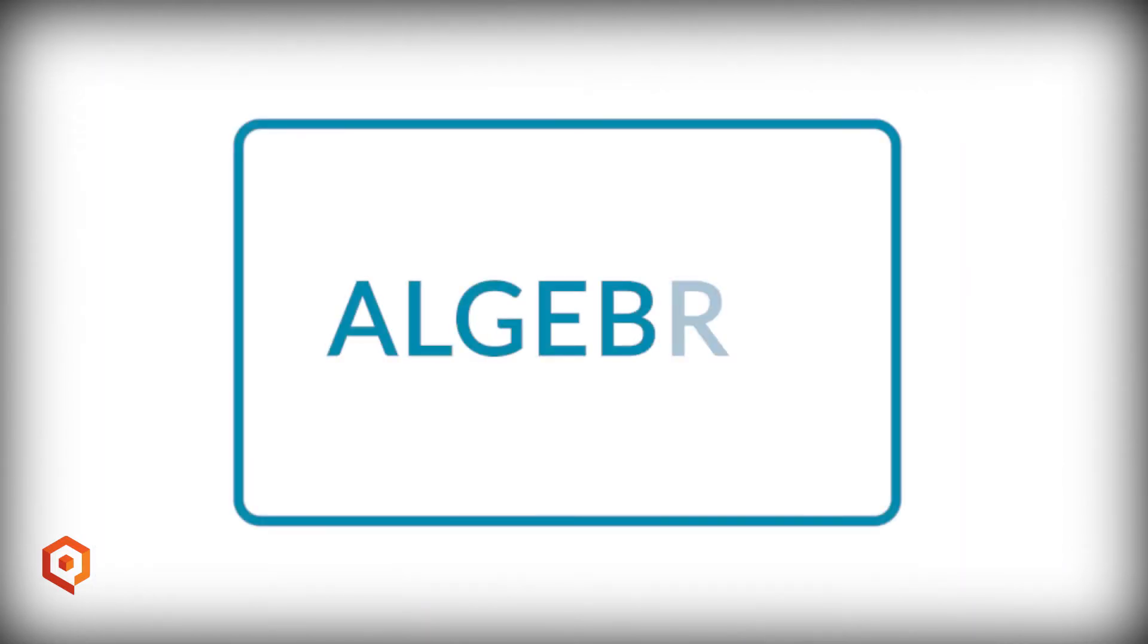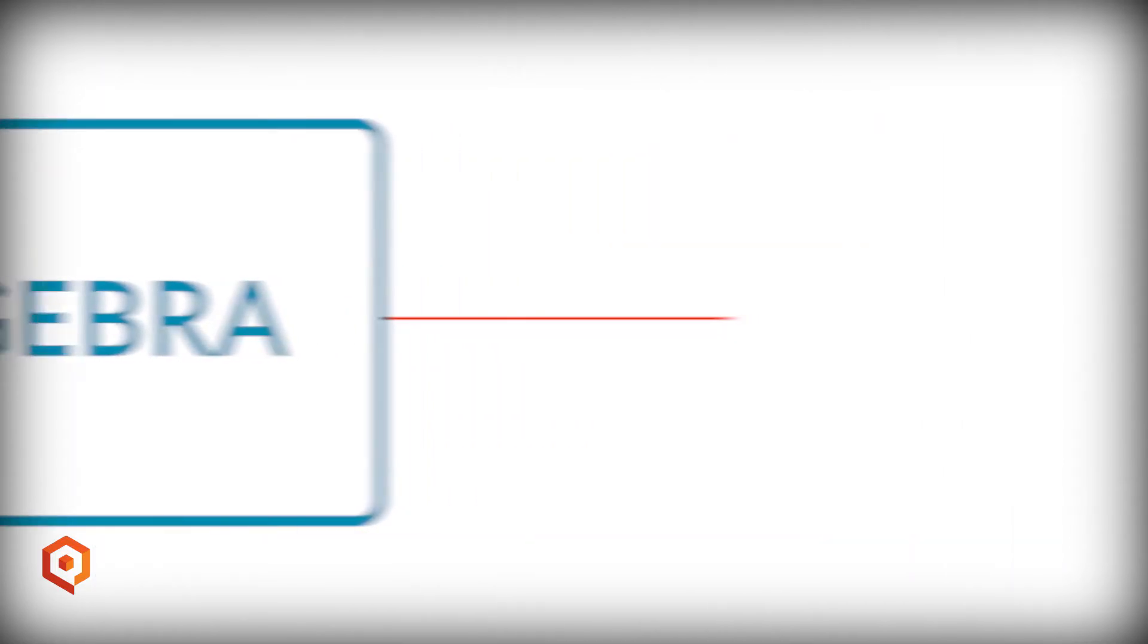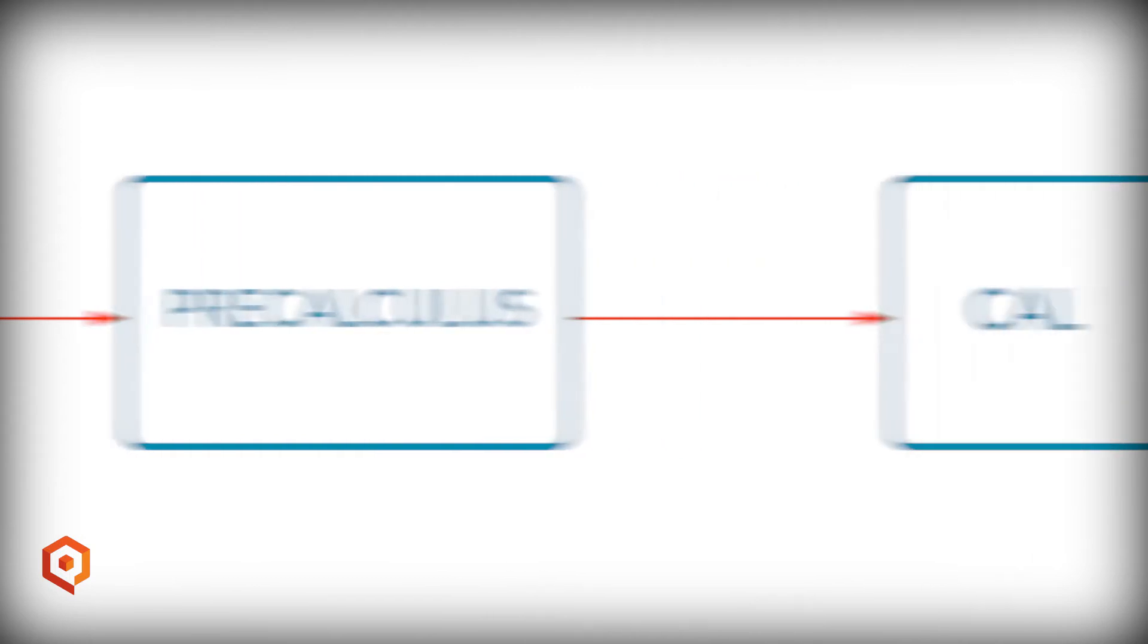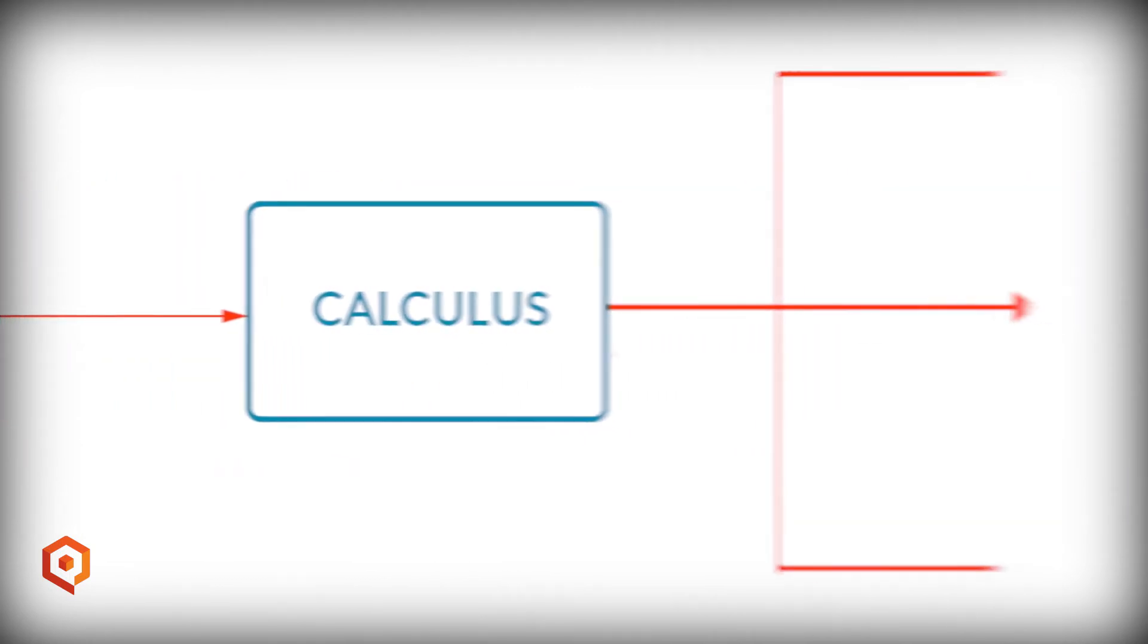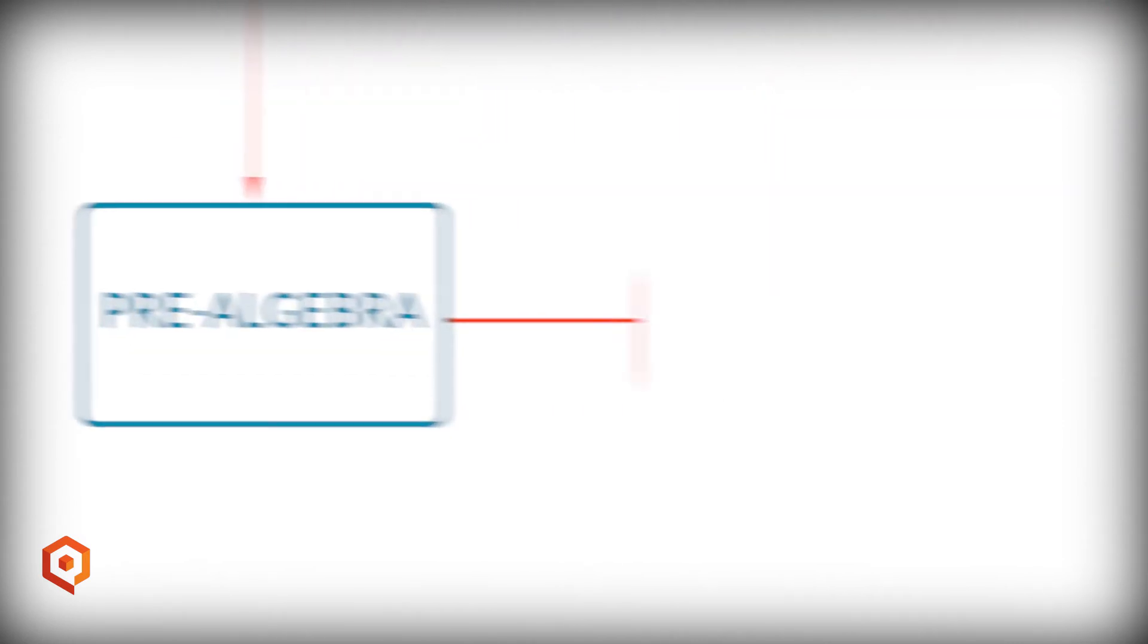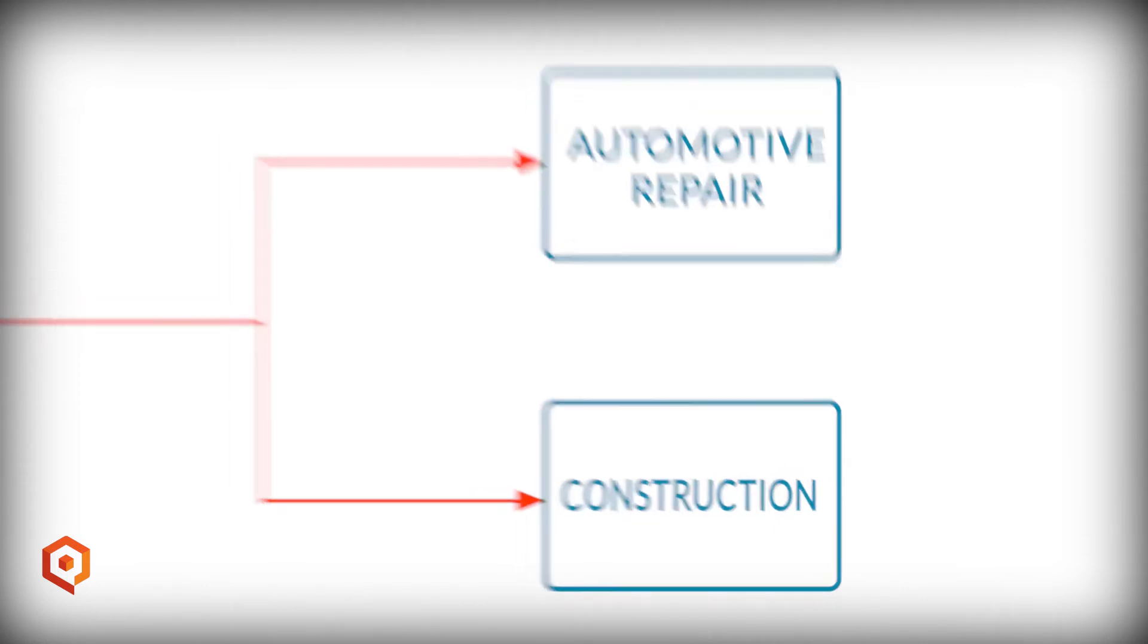By doing the basic algebra first, we can go in the direction of adding more advanced mathematics, such as pre-calculus and calculus, and from there we can go on to chemistry, physics, and engineering. Or we can pick up pre-algebra and apply it to professions like healthcare, or trades like automotive repair and construction.